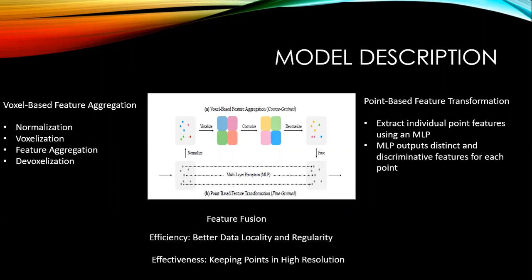In the voxel-based branch, we transform the points into low-resolution voxel grids. Then it aggregates the neighboring points by voxel-based convolution. Then devoxelization is done by converting them back to points.